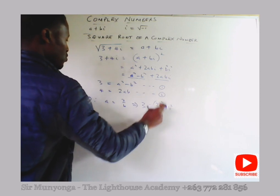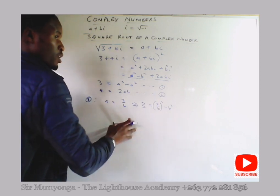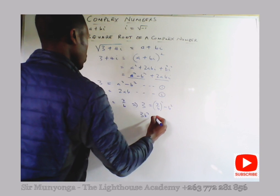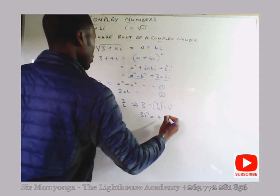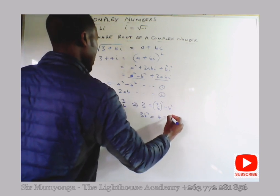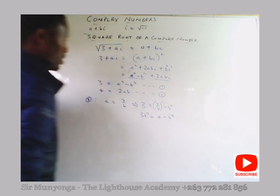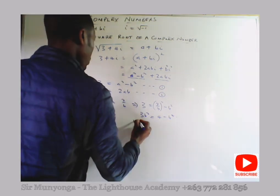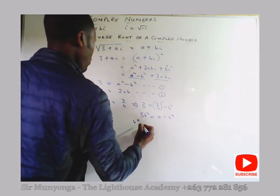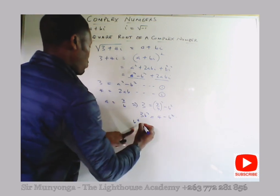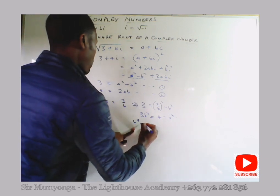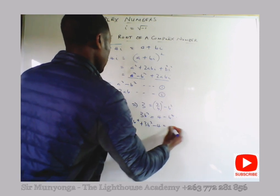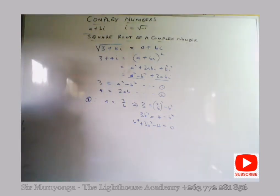This becomes 4 over b squared minus b squared. Multiplying the entire equation by b squared gives 3b squared equals 4 minus b to the power 4, which can be written as b to the power 4 plus 3b squared minus 4 equals 0.